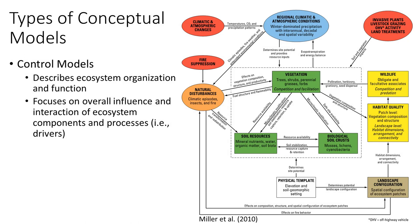Any ecological system can be described using a number of different conceptual models. One model may emphasize the events or processes of a system and their interactions, while another may focus on the components themselves and how the processes or stressors cause changes in the system. Conceptual models can also be created at different scales, and several different types describing the same ecosystem can be helpful in developing monitoring programs.